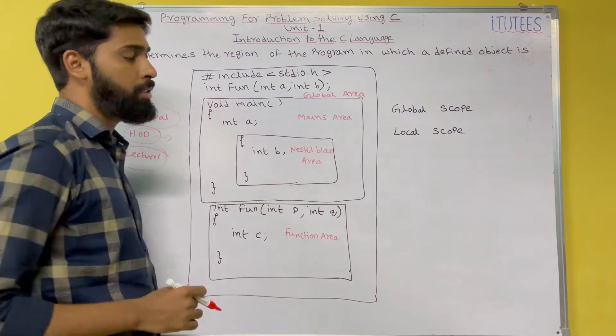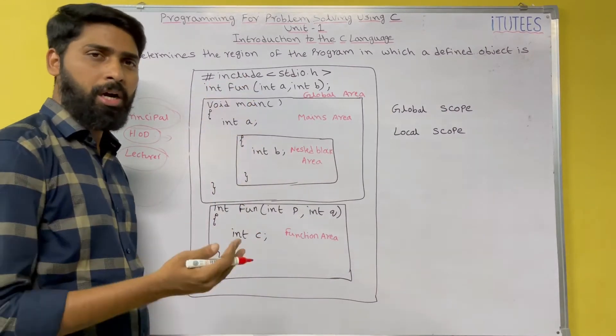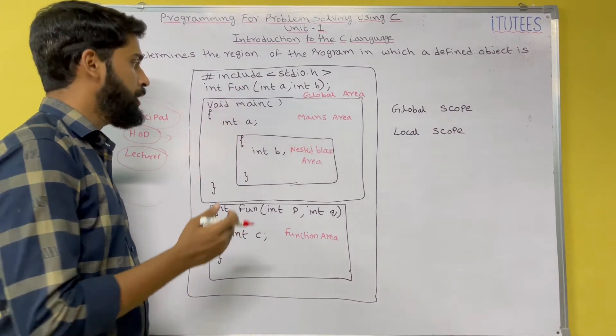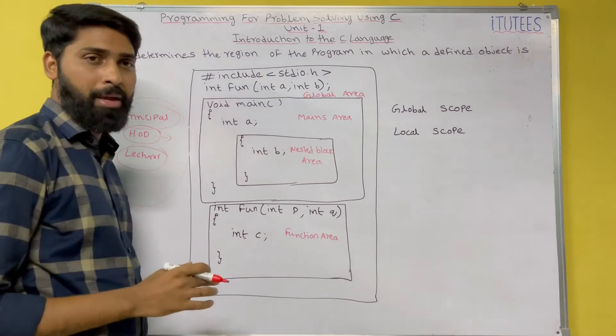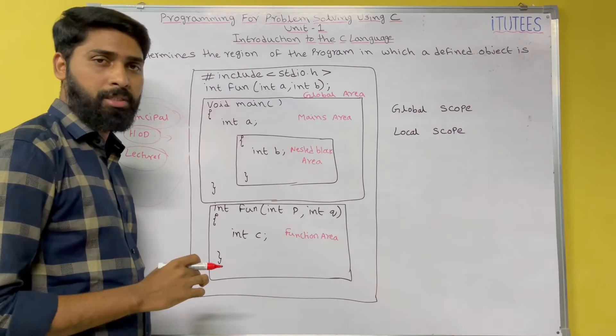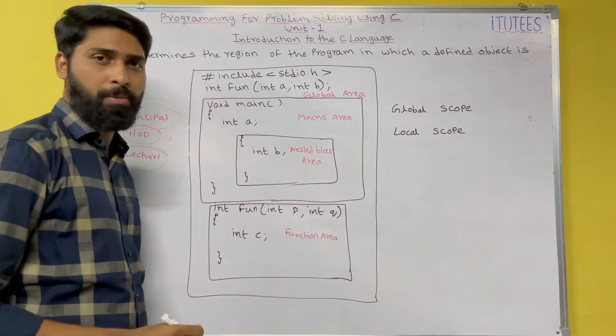Now coming to our C program. So how you can start the C program? Header files. After you can specify the functions what are you using in your program. Here, after you start the main function and you write the code. And after that, if you specify any functions, then you can define the functions. So this is the structure of C program.